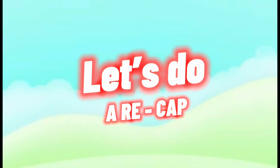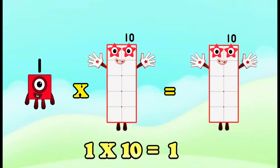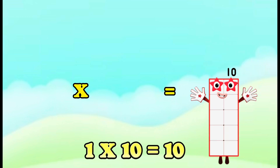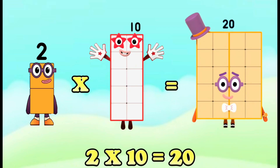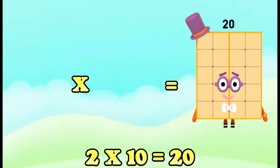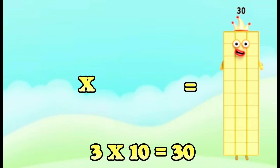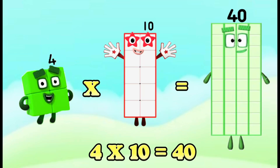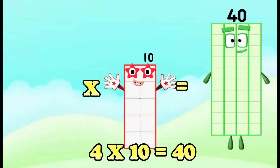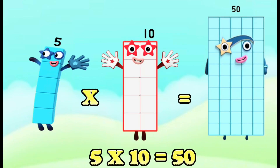Now join me and let's do a recap. In multiplication: 1 times 10 is equals to 10. 2 times 10 is equals to 20. 3 times 10 is equals to 30. 4 times 10 is equals to 40. 5 times 10 is equals to 50.